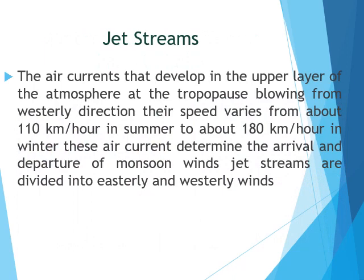The next factor is jet streams. Jet streams are air currents that develop in the upper layer of the atmosphere at the tropopause, blowing from a westerly direction. Their speed varies from 110 km per hour in summer to about 180 km per hour in winter. These air currents determine the arrival and departure of monsoon winds.